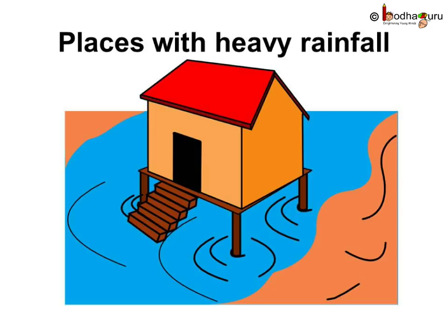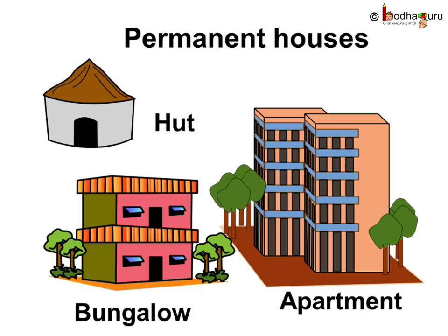Hence, in the areas where it rains a lot, the houses are built on stilts and have sloping roofs. The various pakka houses, apartments, bungalows and even kaccha houses cannot be moved from one place to another and are called permanent houses.